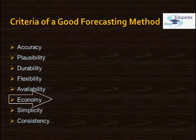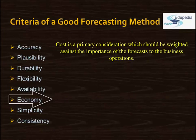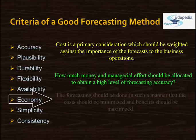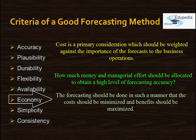Economy is a prime consideration. Cost should be weighed against the importance of the forecast to the business operations. A question may arise: how much money and managerial effort should be allocated to obtain a higher level of forecasting accuracy? The criteria here is economic consideration — we should see the cost in terms of the benefit which would come out of the exercise. Based on cost and accuracy, we will have to choose the method.